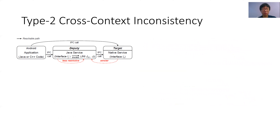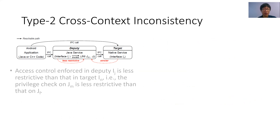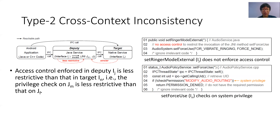This figure illustrates the type 2 cross-context inconsistency enforcement. The access control enforcing the deputy IJ is less restrictive than that in the target IN — that is, the privilege check on GM is less restrictive than that on GF. This code snippet shows a real case of type 2 cross-context inconsistency. The deputy IJ is the interface setRingerModeExternal of audio service, and the target IN is the interface setForceUse of audio policy service. The deputy setRingerModeExternal internally calls the JNI method setForceUse, whose corresponding JNI function will invoke the target. No access control is enforced to restrict the JNI method, while the access control on the JNI function is checked at system privilege.